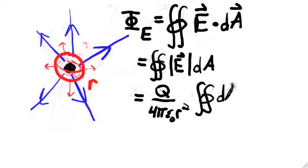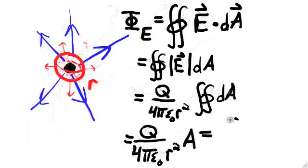The magnitude of the electric field is constant across the surface of the sphere and is given by Coulomb's law. Finally, our surface integral reduces to the area of a sphere, 4 pi r squared. Thus, we find that the flux out of the sphere is equal to q over epsilon naught.